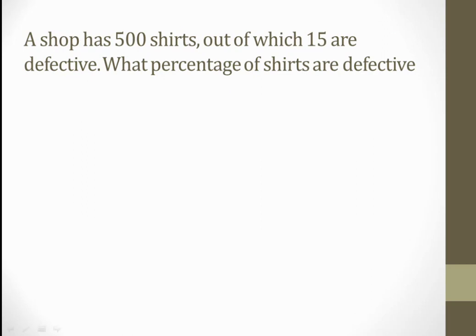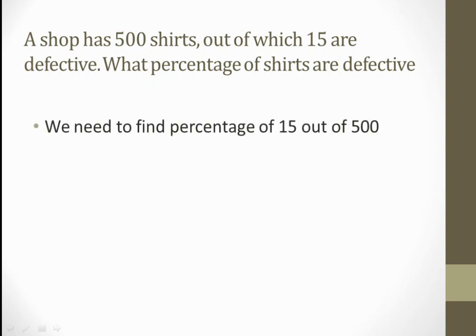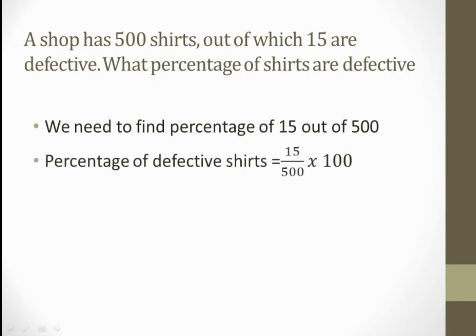Next question: a shop has 500 shirts, out of which 15 are defective. What percent of shirts are defective? We need to find out the percent of defective shirts — 15 are defective out of 500. So 15 over 500, and we need percent, so we multiply with 100. The zeros cancel out and we get 15 over 5, that is 3 percent. So 3 percent is our required answer.